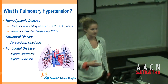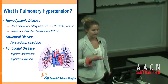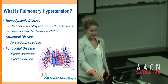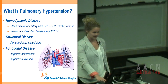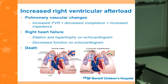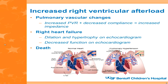It's a structural disease in that the vasculature itself is abnormal, and functionally there's impaired constriction and relaxation that gets worse as the disease progresses. All of this is a problem because it increases the right ventricular afterload. Pulmonary hypertension is ultimately a disease of right ventricular failure — the increased pulmonary vascular resistance and decreased compliance leads to increased impedance, then right heart failure, seen as dilation and hypertrophy on echocardiogram.